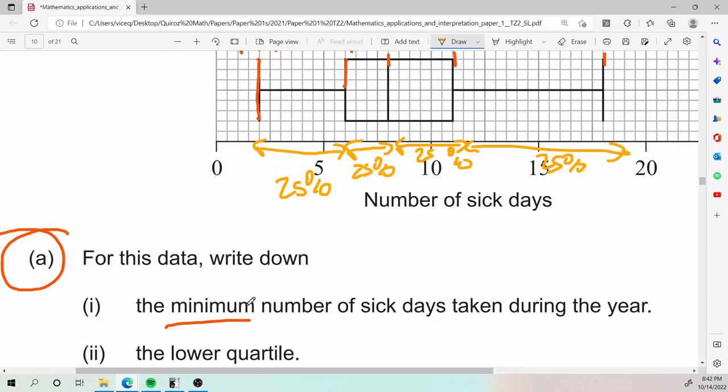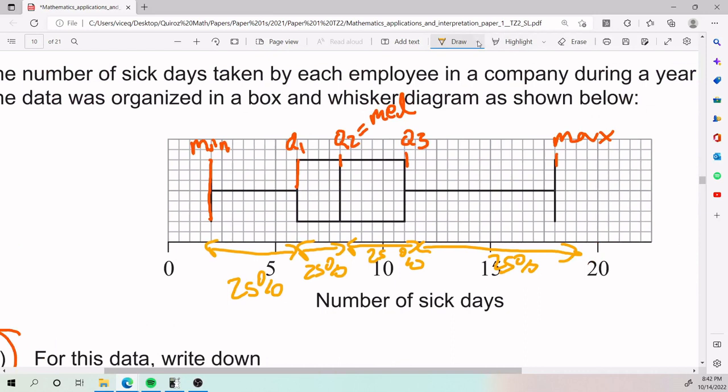Yeah, so for part five, part A, part i, we need the minimum number of sick days taken during the year. We said that the minimum is the first guy shown here, and so let's try to find out how much that value is.